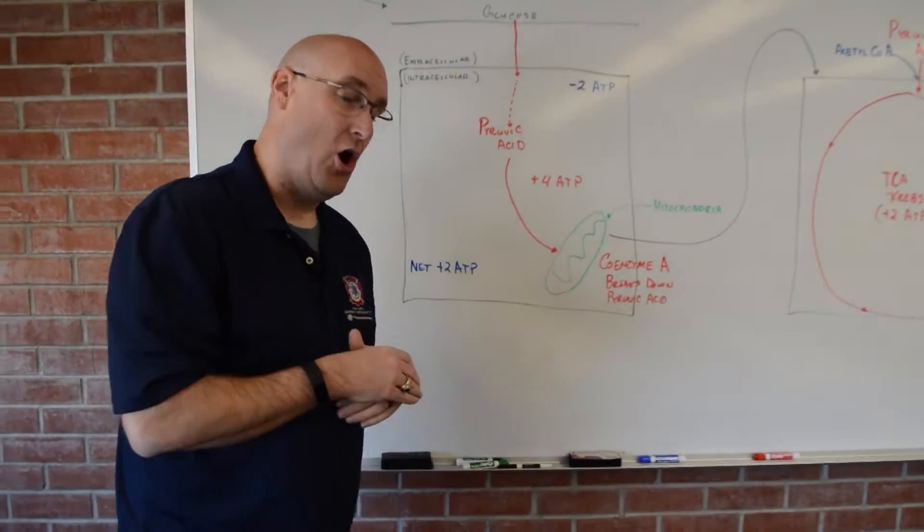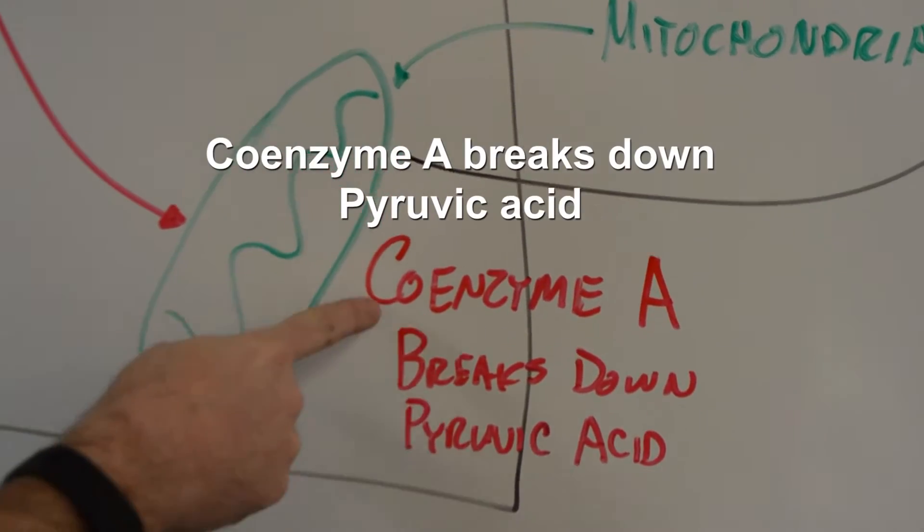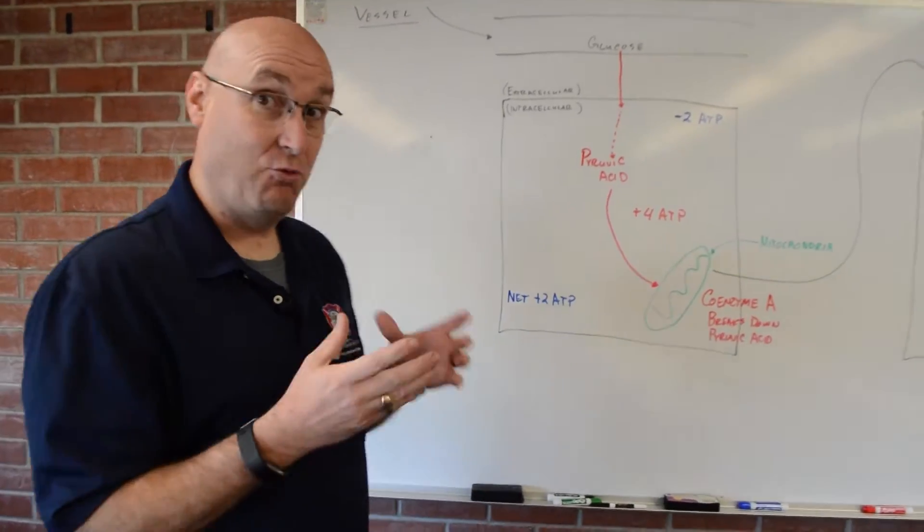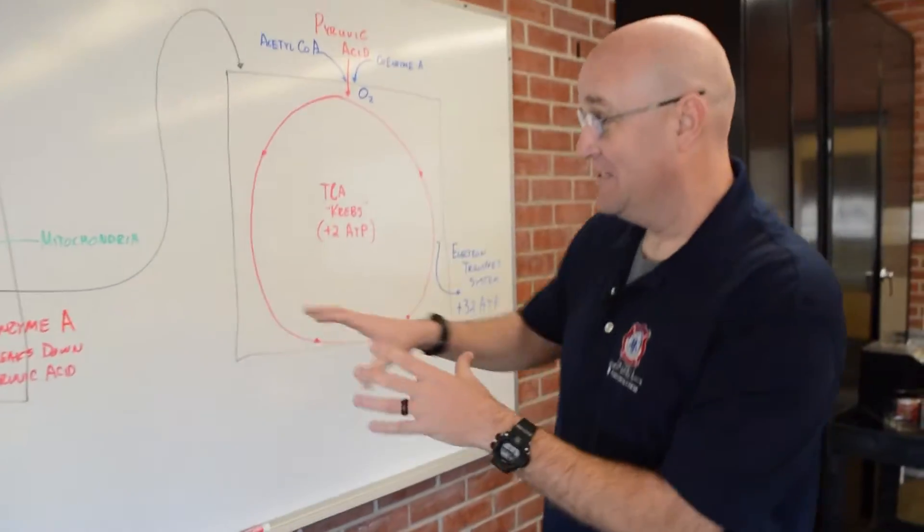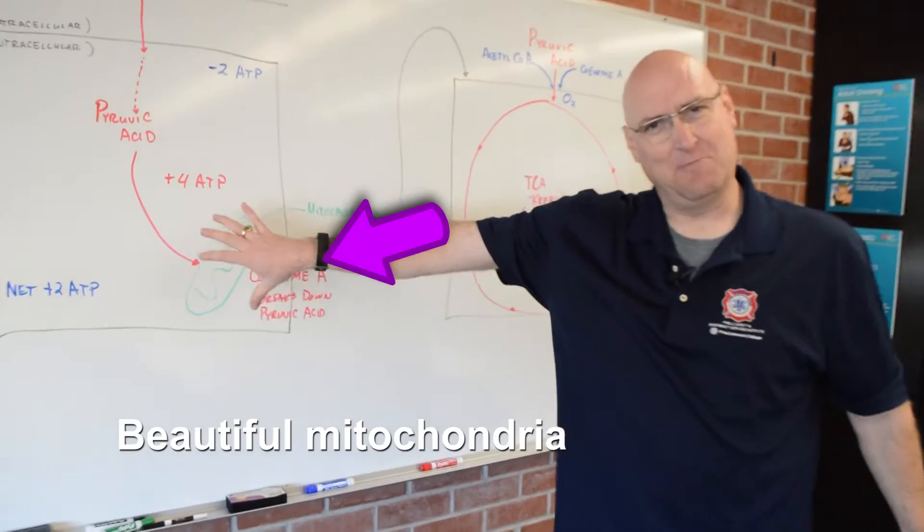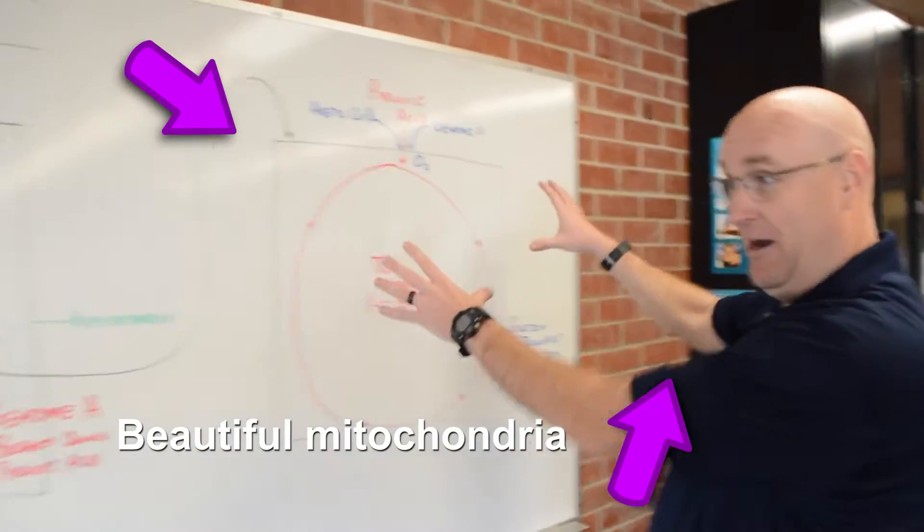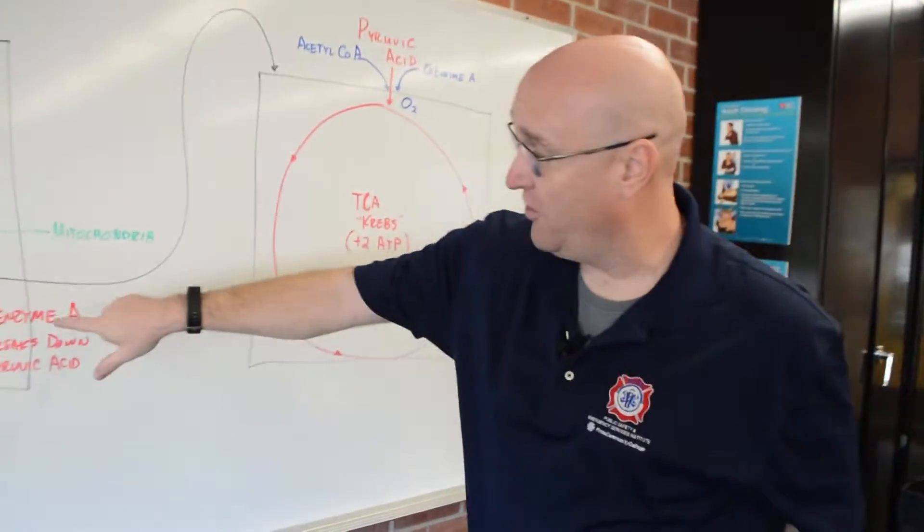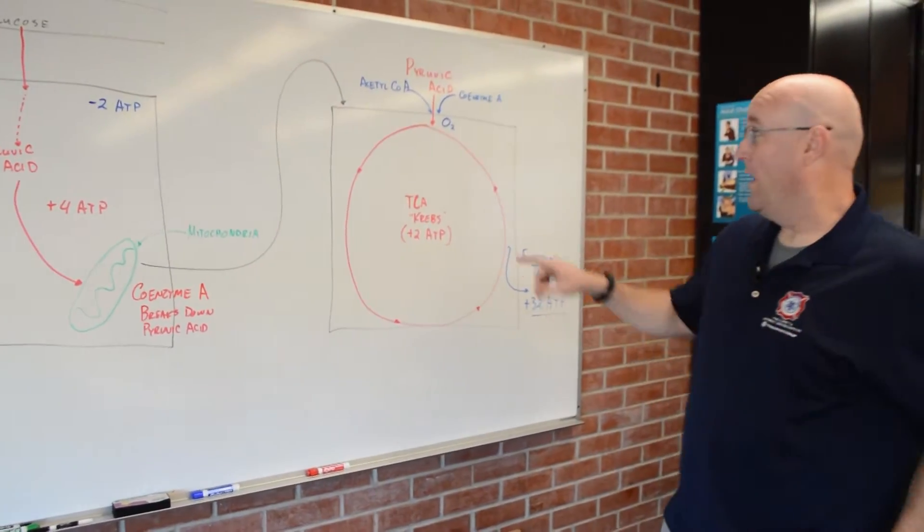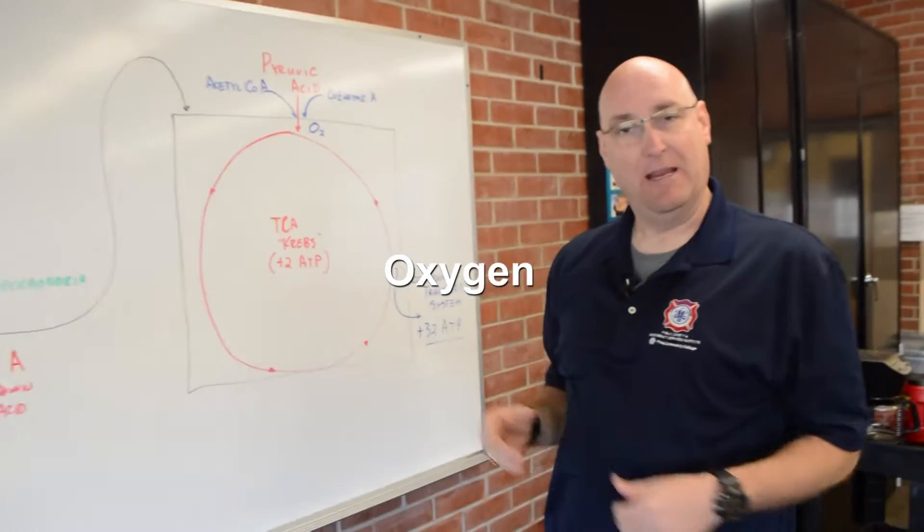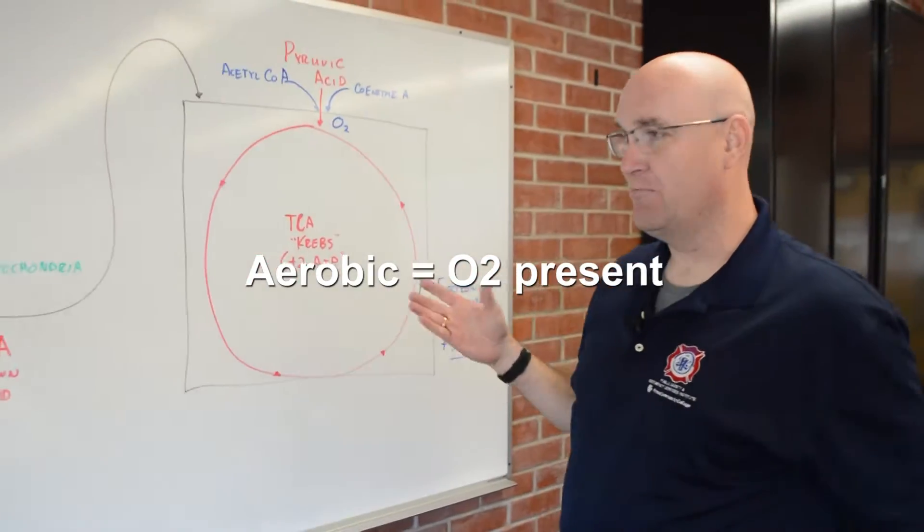So we need to break down the pyruvic acid within the cell. And this coenzyme, coenzyme A, breaks down pyruvic acid. And this is where we get most of our energy. This is a beautiful representation of mitochondria, the mitochondria right here blown up. So this coenzyme breaks down this pyruvic acid. And the key to this is we also need oxygen. It needs to be aerobic. We need to have oxygen present.